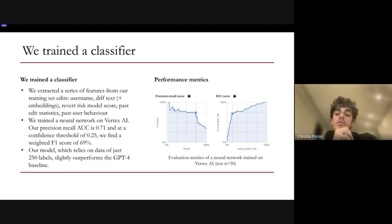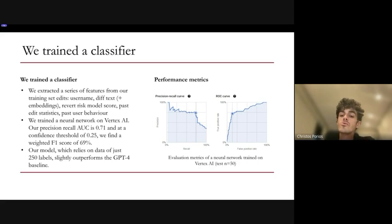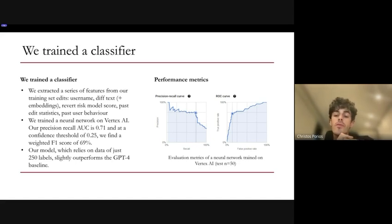Our classifier uses a variety of features including username details, the content of the edit, and statistical data on past edits. We also incorporated the pre-existing Wikipedia language-agnostic revert risk model to predict the likelihood of an edit being reverted in the future. We then trained a neural network on the labeled data. Our model achieved a precision-recall AUC of 0.71 and a weighted F1 score of 0.69, slightly outperforming the GPT-4 baseline.